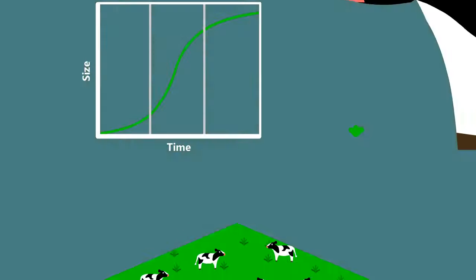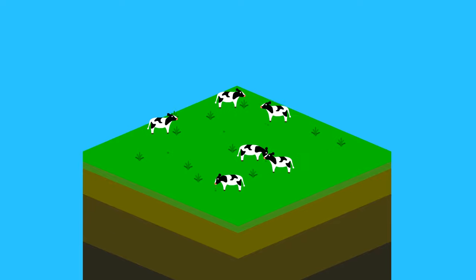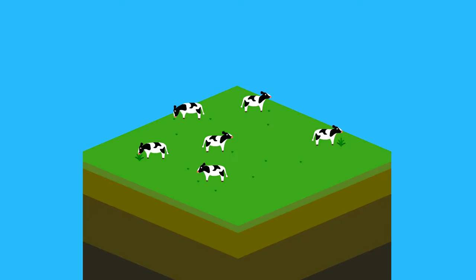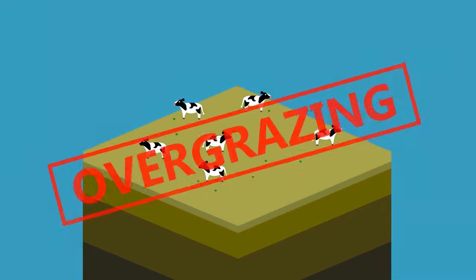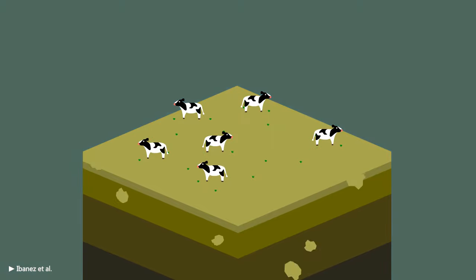This is what happens with traditional pastured animals. They eat all the grass, which doesn't have the chance to grow back fast enough before getting eaten again, and we have overgrazing. This leads to soil erosion, drought, and desertification.